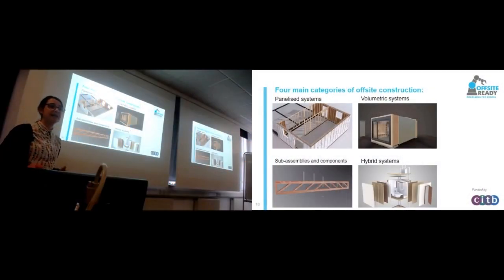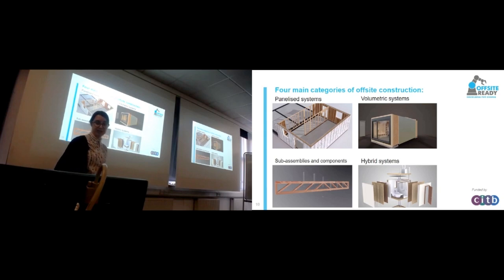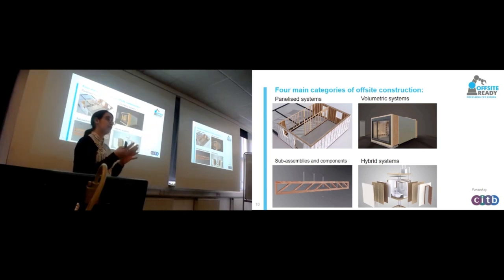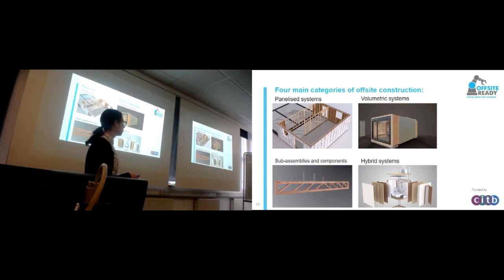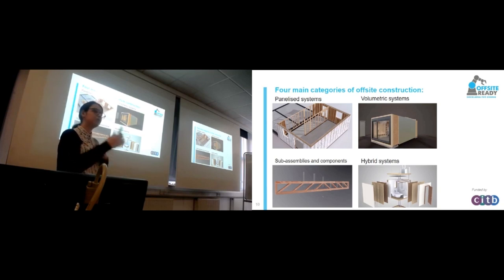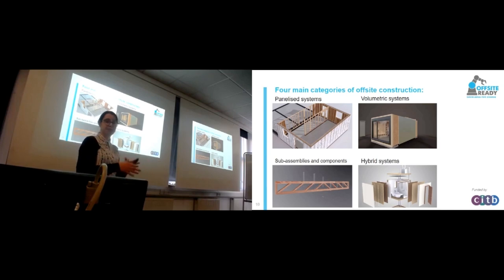There are four main types of offsite construction systems. We have the panelised type, which is where you have the 2D wall segments. We also have volumetric systems, where you have the 3D — what we sometimes call boxes — transported on the back of trucks and then installed on site, as well as sub-assemblies and components, such as I-joists or web beam trusses. And of course hybrid systems, which combine two or more of these elements into one system, making it more suitable for a specific project.